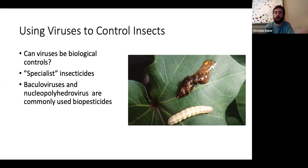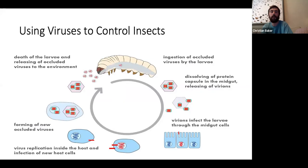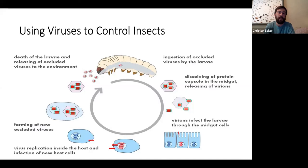How do these viruses work against caterpillars? A farmer applies the viruses to his field, the caterpillar ingests some of the leaves and picks up virus particles. The virus moves into the midgut, dissolves, and releases virions, which then spread throughout the midgut and into other cells throughout the insect. The virus causes tissues and organs to rupture, and the insect basically falls apart and dies within five to twelve days. When the insect falls apart, the virus is released back into the environment to control more insects feeding on those plants.